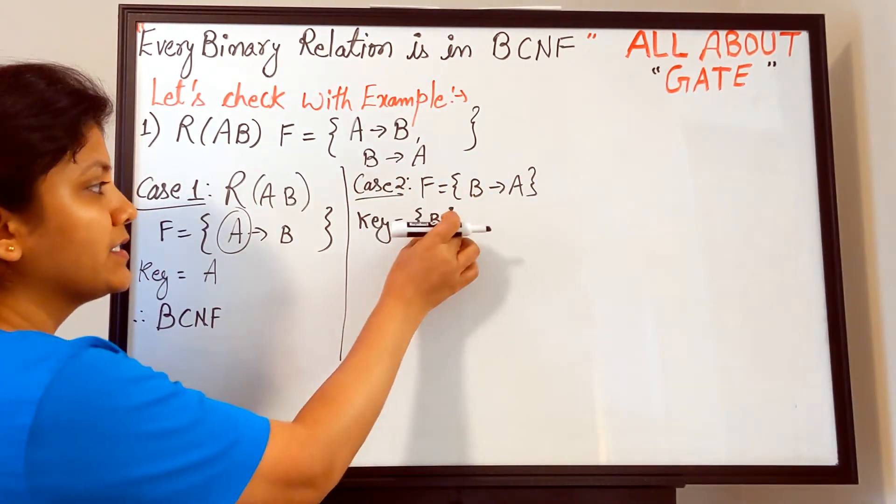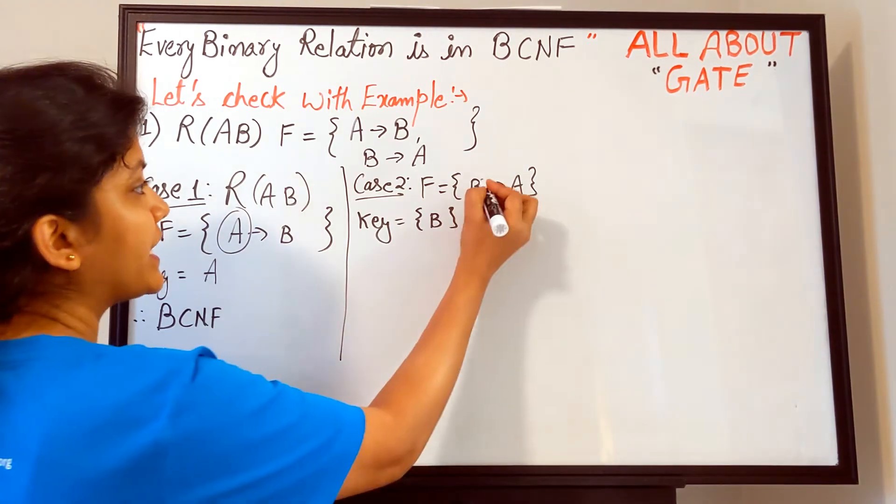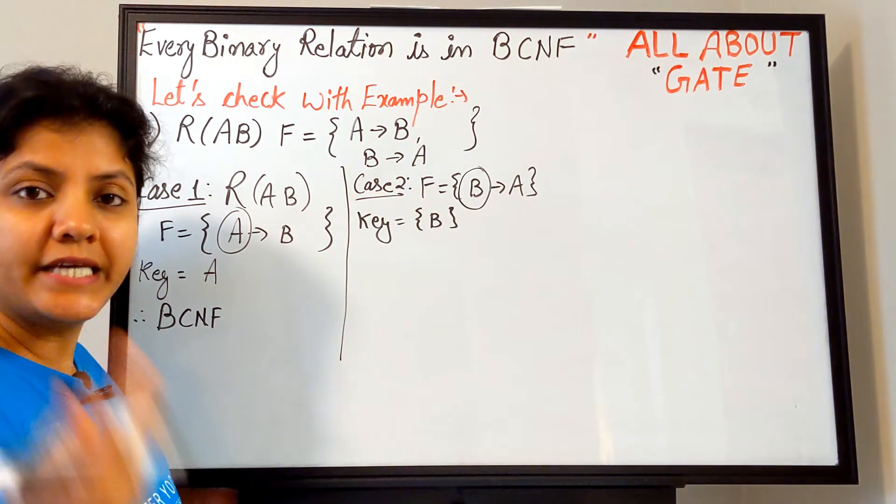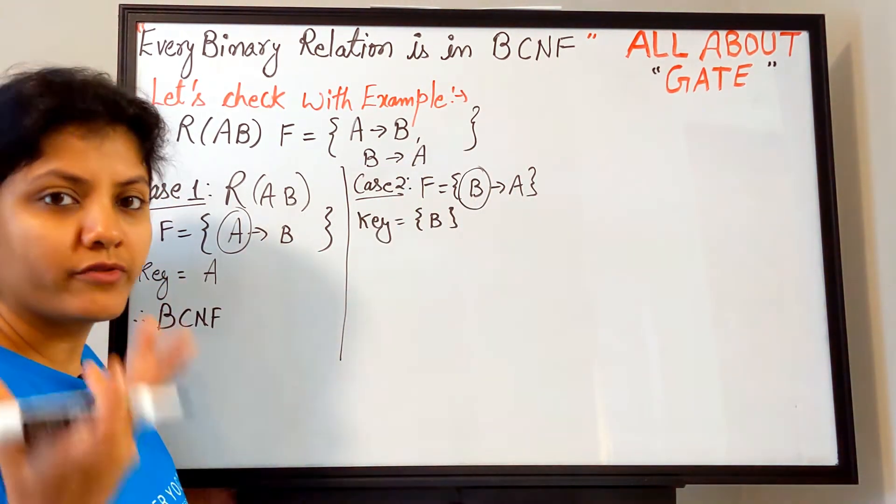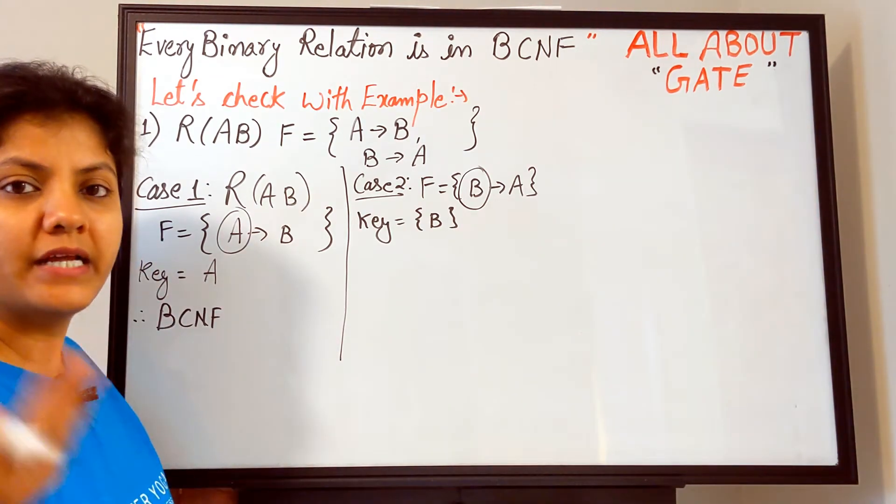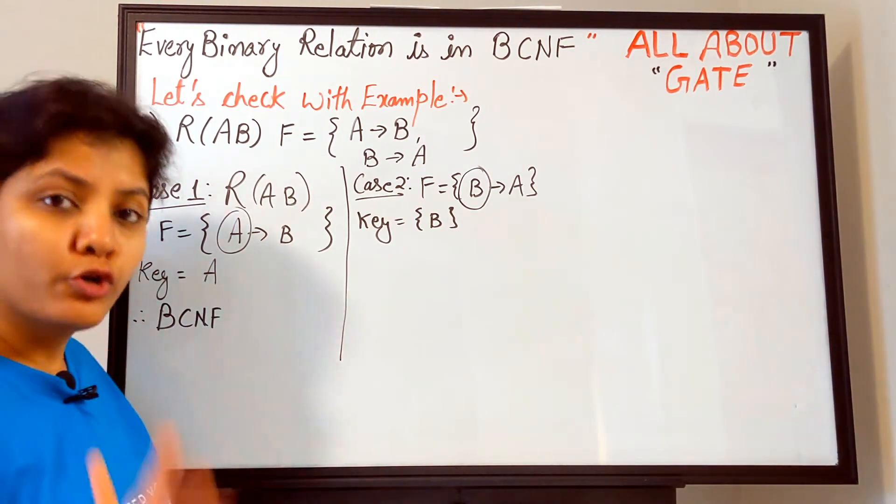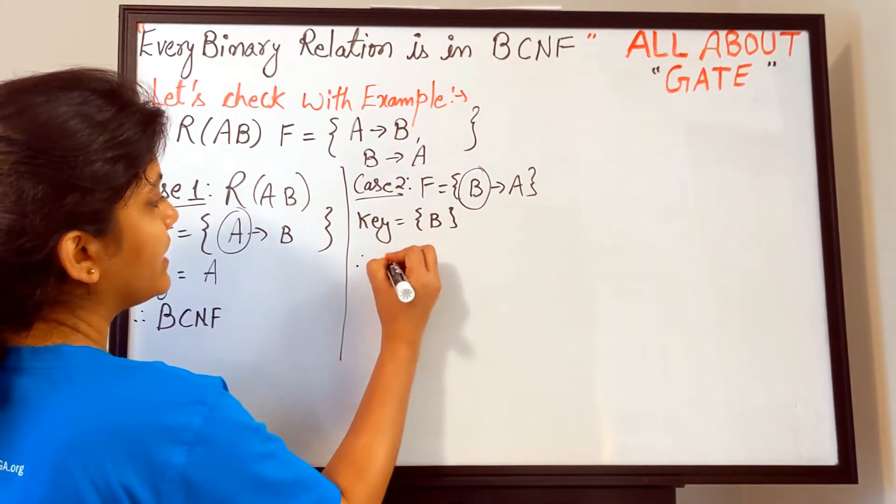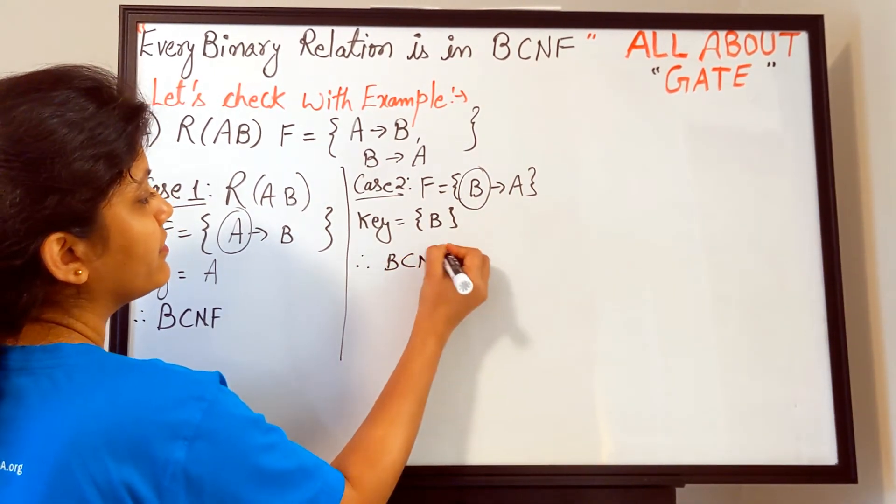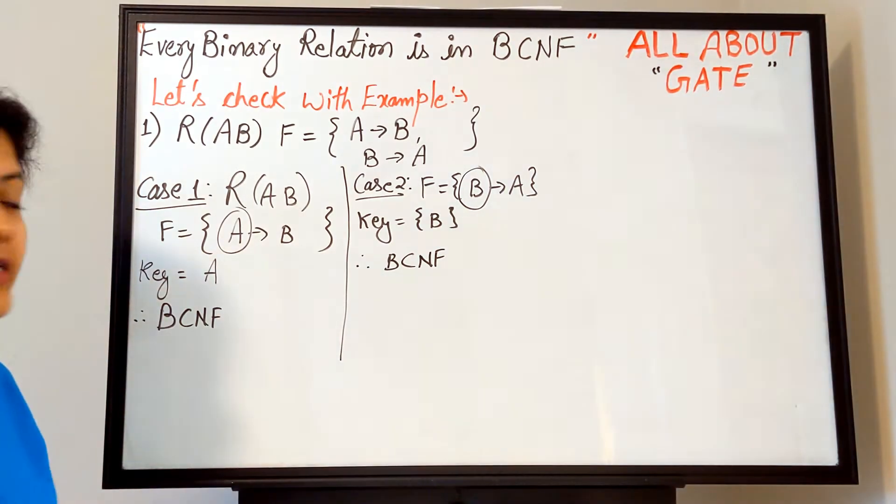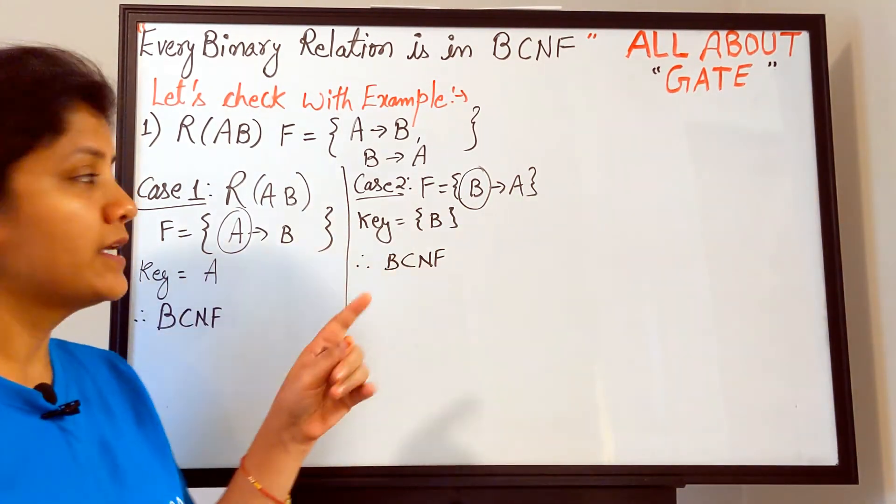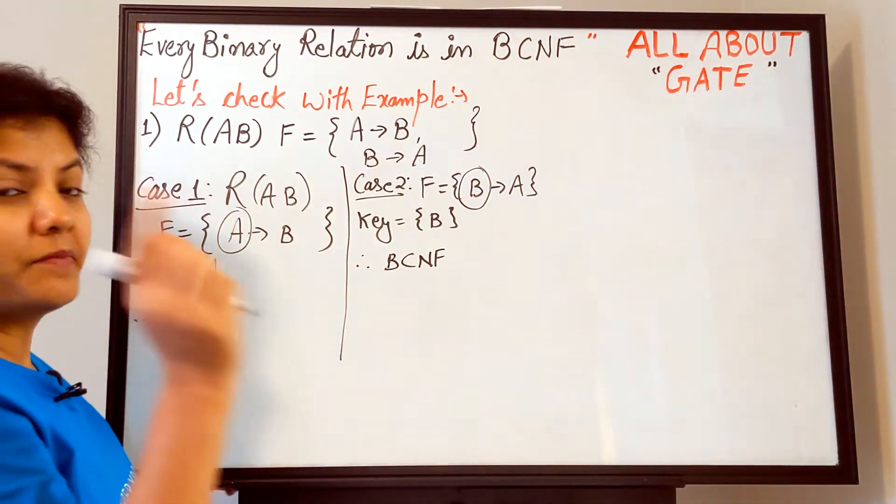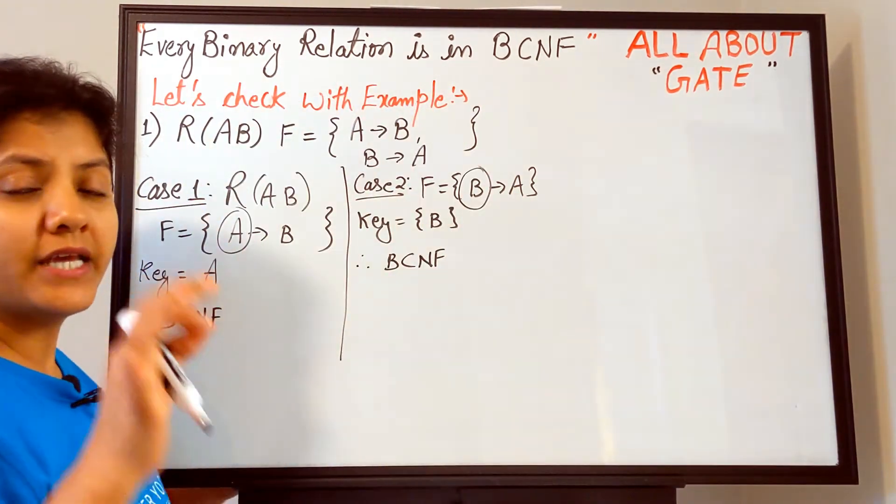B determines the value of A. So when you take the B closure, B+ = {B, A}, and this is singleton also. Once again, determinant is nothing but the key itself—candidate key or super key. If this is the part of determinant, the functional dependency has no flaw. So once again, what is the nature? BCNF, certainly BCNF.